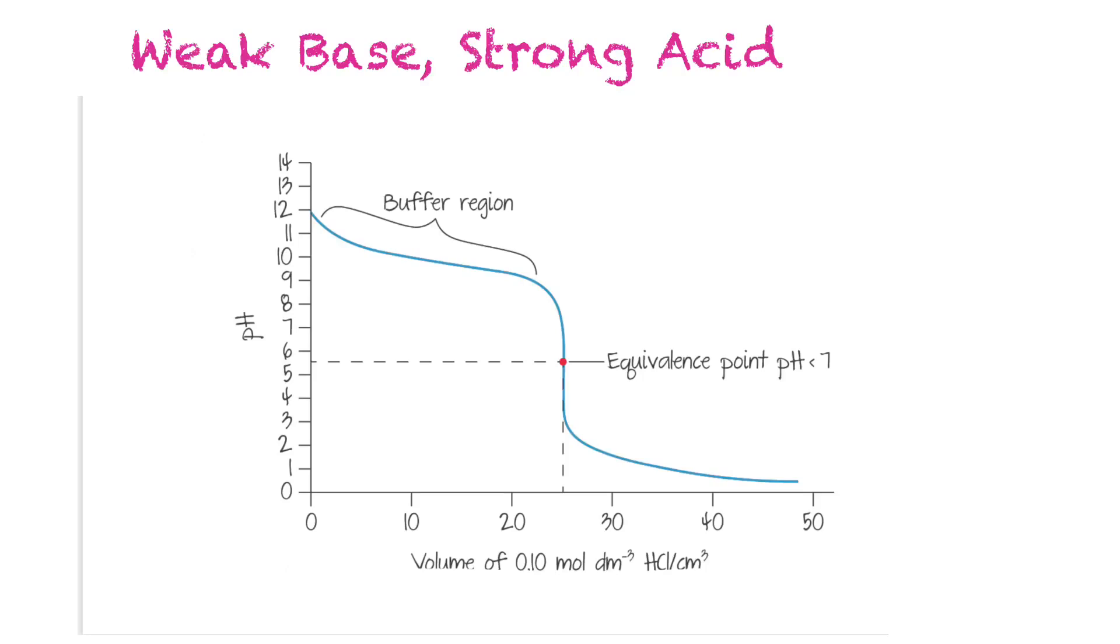If we were to look at a titration curve of a weak base with a strong acid, you'll see again there's resistance to pH change initially, so that's the buffer region. Then the equivalence point is less than pH of 7 because of the production of an acidic salt.